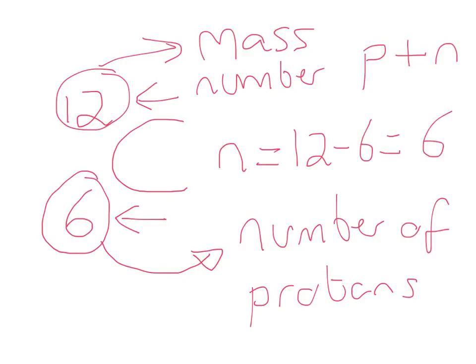If this is an atom, this bottom number, the proton number, tells us the 6 protons. If it's an atom, there's no overall charge. So in an atom, that also tells us the number of electrons. Only if it's an uncharged atom, remember.